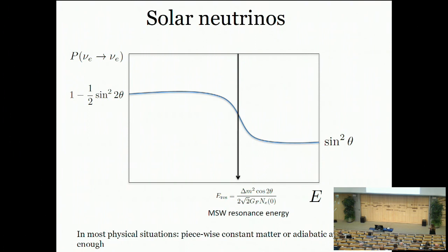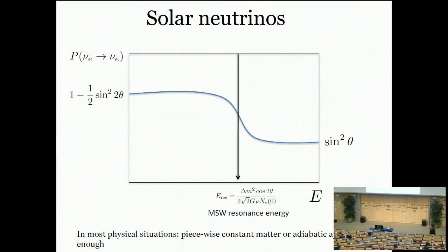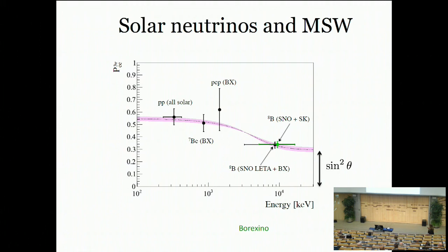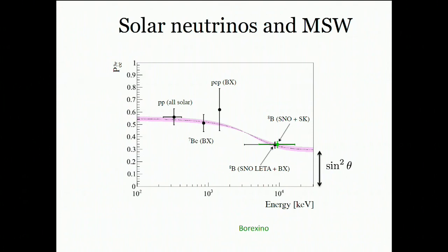Here is the survival probability as a function of energy measured over many years by solar neutrino experiments. Experiments measuring the higher energy range allow us to essentially read off the vacuum mixing angle relevant for oscillations in the sun.